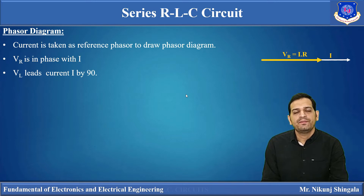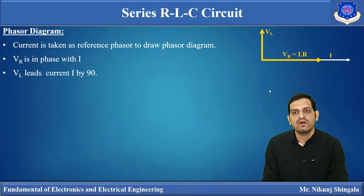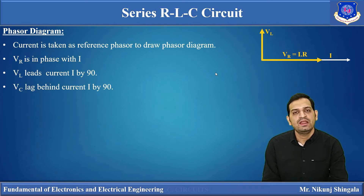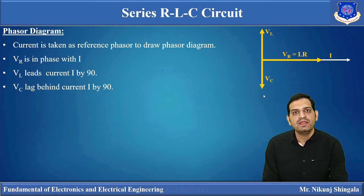The next quantity is Vl. For a purely inductive circuit, Vl — the potential difference across the inductor — leads the current by 90°. Since phasors rotate in the anti-clockwise direction, Vl will be drawn in the upward direction. So Vl leads I by 90°. The third quantity is Vc, the potential difference across the capacitor. For a purely capacitive circuit, current leads voltage by 90°, or equivalently voltage lags behind current by 90°. Since phasors are drawn anti-clockwise, Vc will be in the downward direction — I leads Vc by 90°.